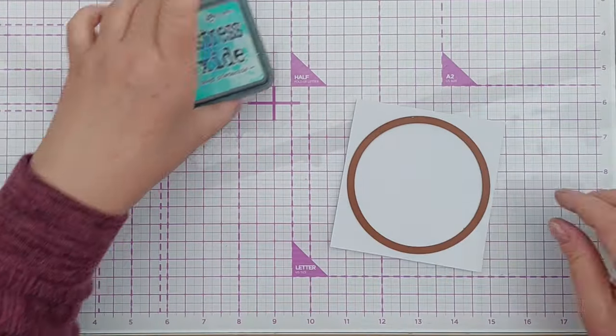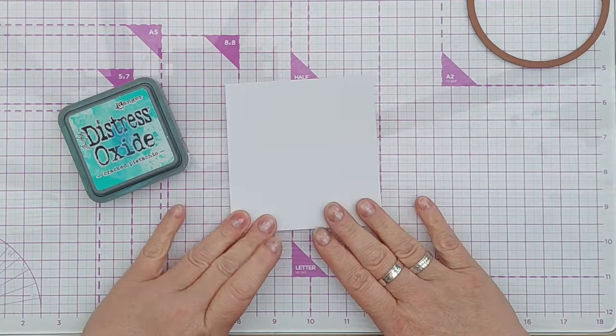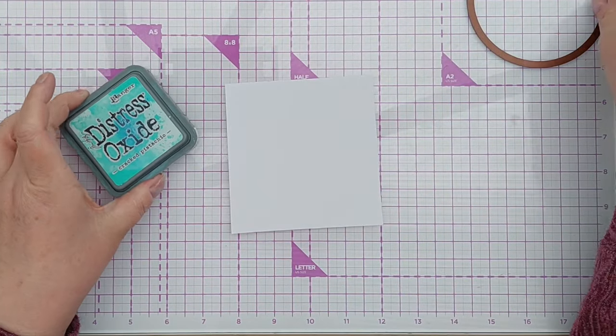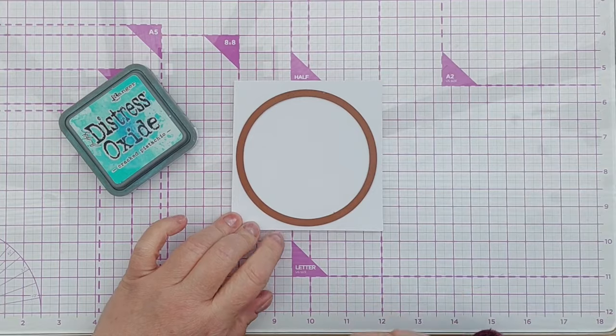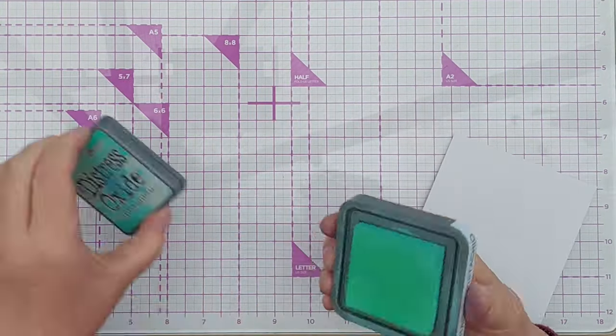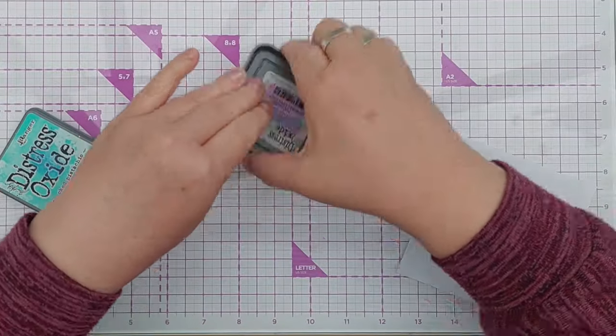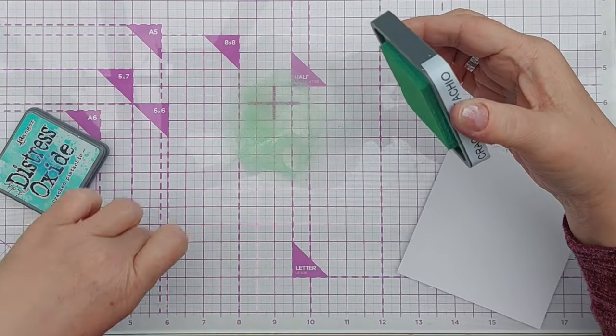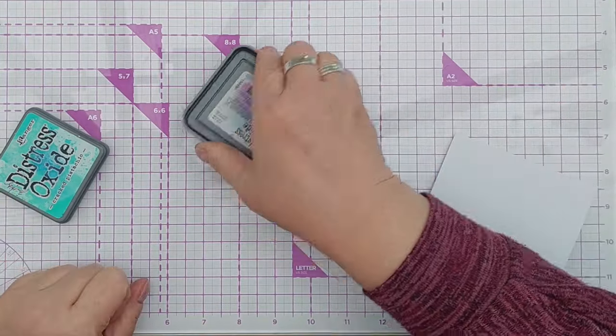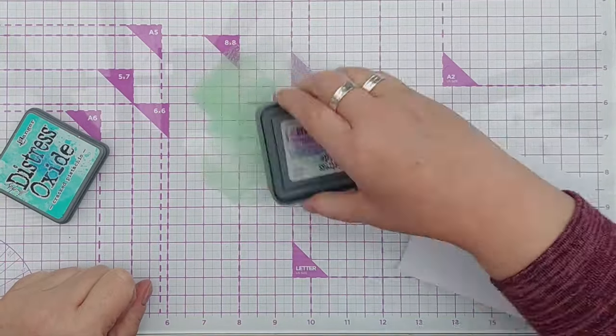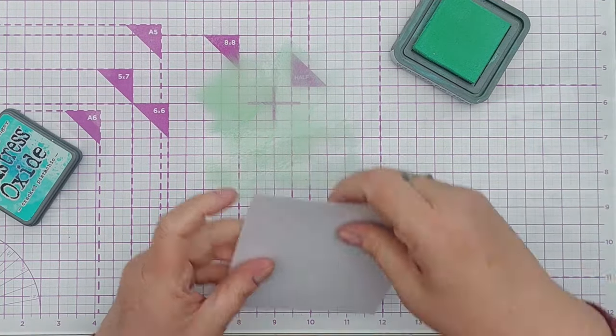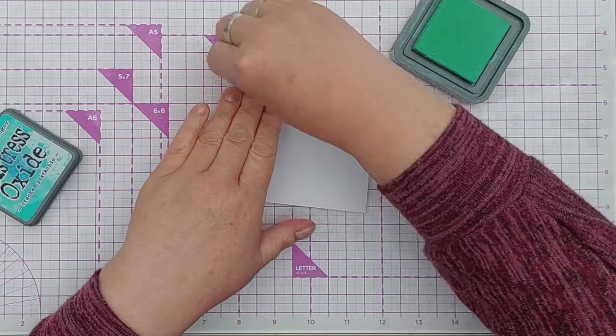The first thing I want to do is color this piece of mixed media paper with Cracked Pistachio Distress Oxide. This is going to be big enough to cut out a big circle from. I'm going to smush this down onto my glass mat, spritz it with water, and smush my paper down into it.